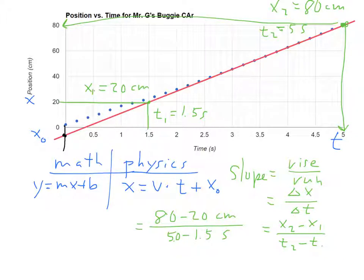And continuing on over here, that would mean 60 centimeters of travel divided by 3.5, divided by 3.5 seconds. And then, what is that? Let's do a quick calculation. 60 divided by 3.5 is 17.1.